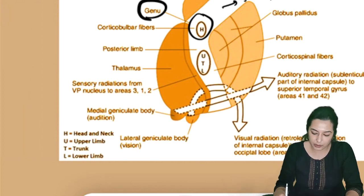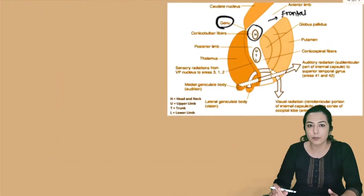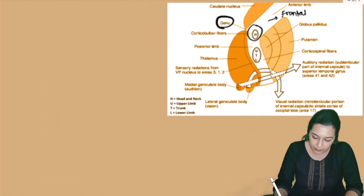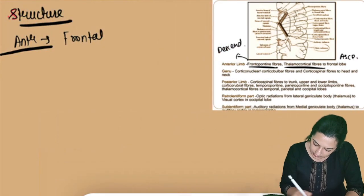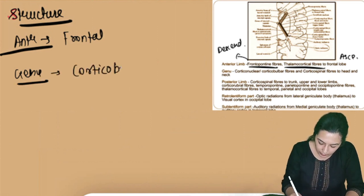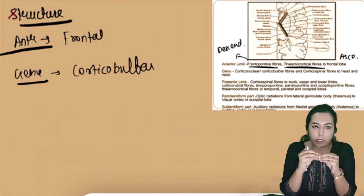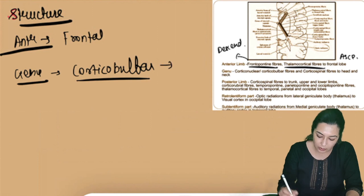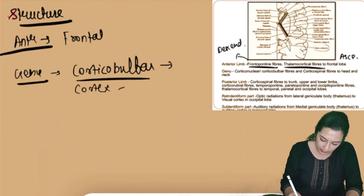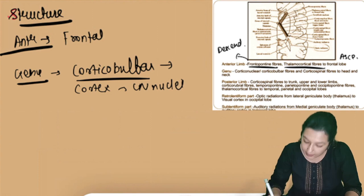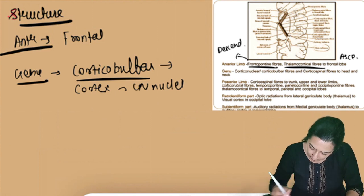If a patient presents with dense hemiplegia especially of the upper limb, trunk, and lower limb, you must suspect posterior limb infarct of the internal capsule. The genu contains corticobulbar fibers supplying cranial nerve nuclei in the brain stem — from cortex to cranial nerve nuclei — mainly supplying the head and neck area, along with corticospinal fibers to the head and neck.